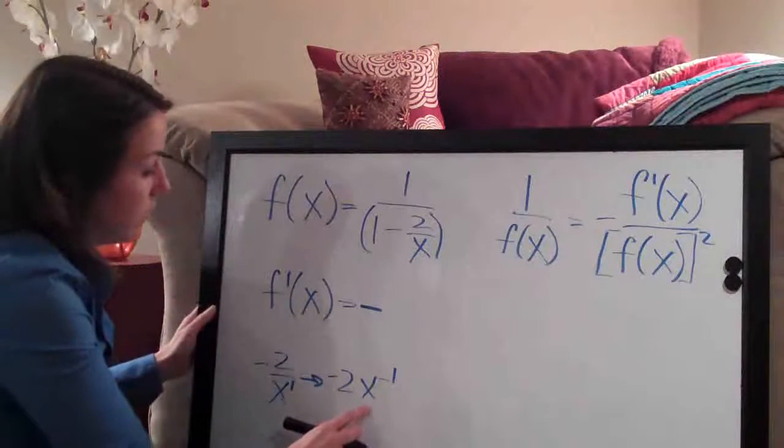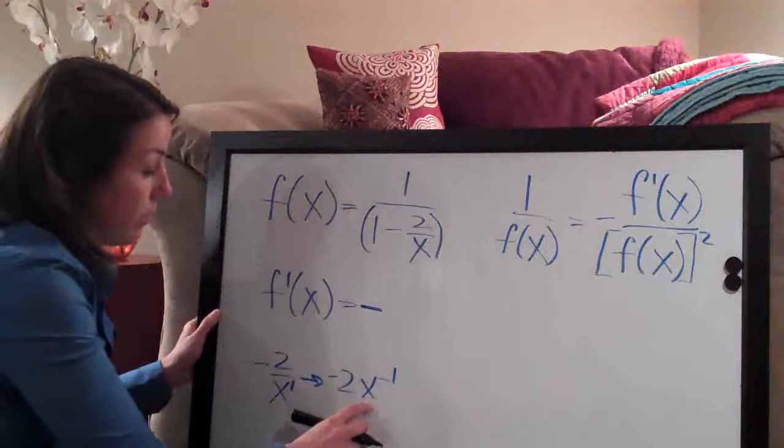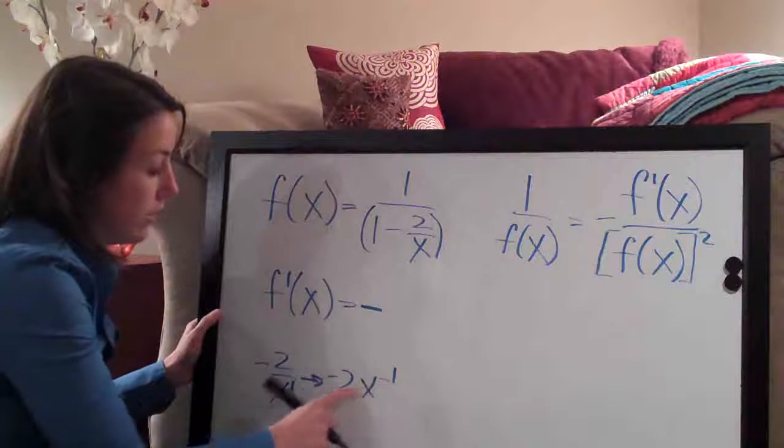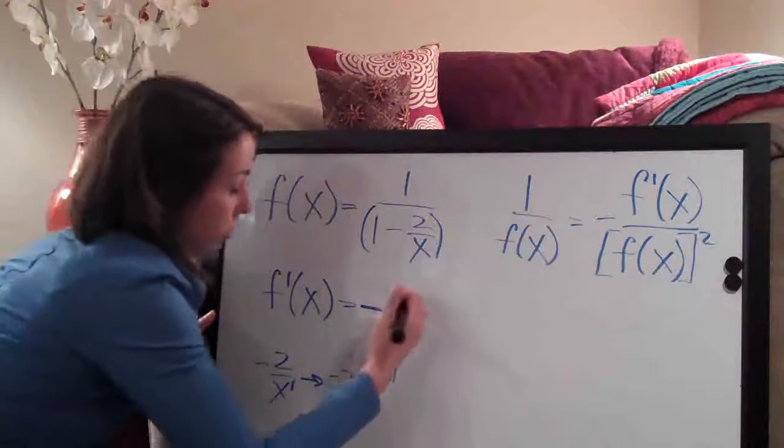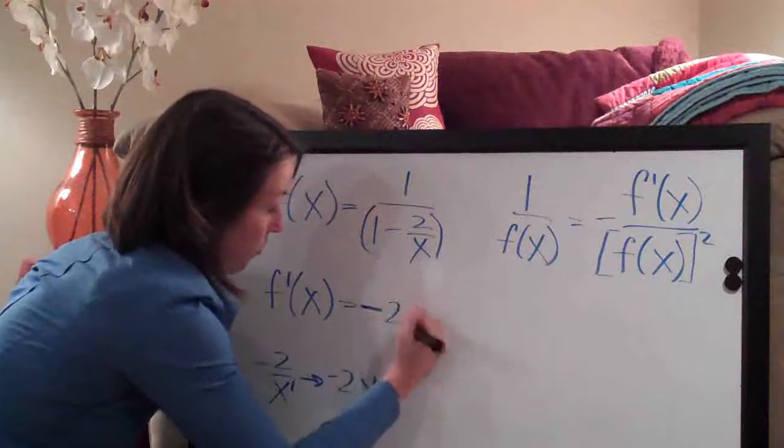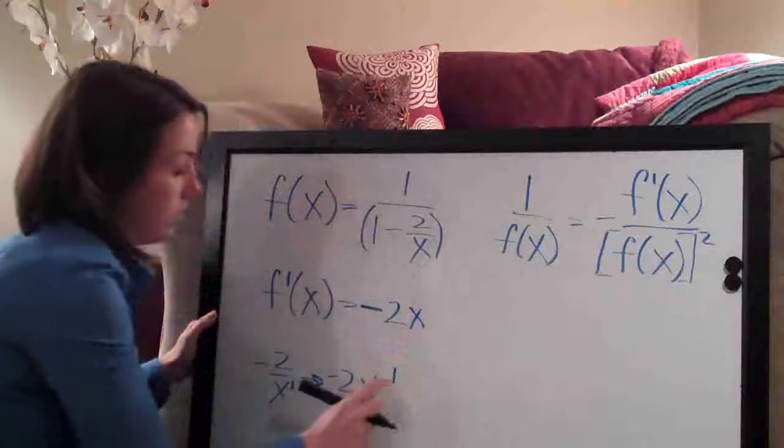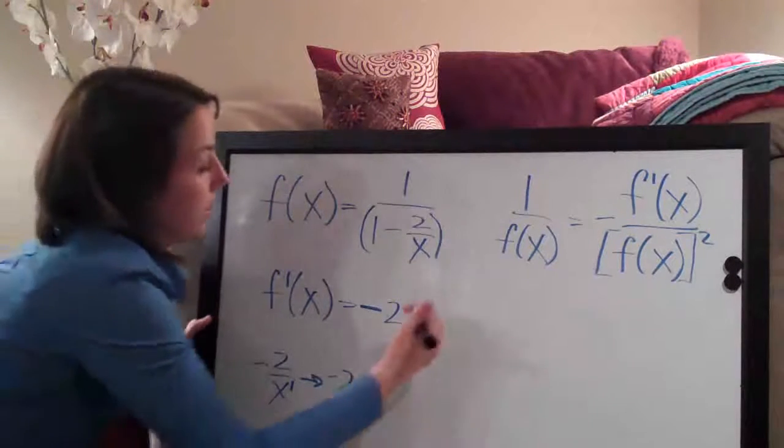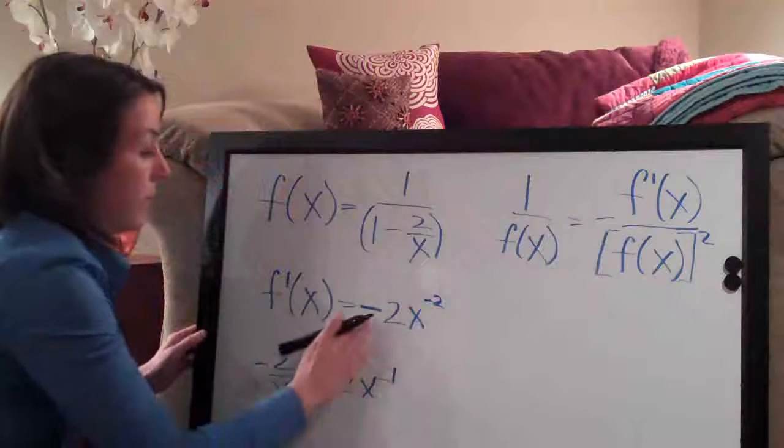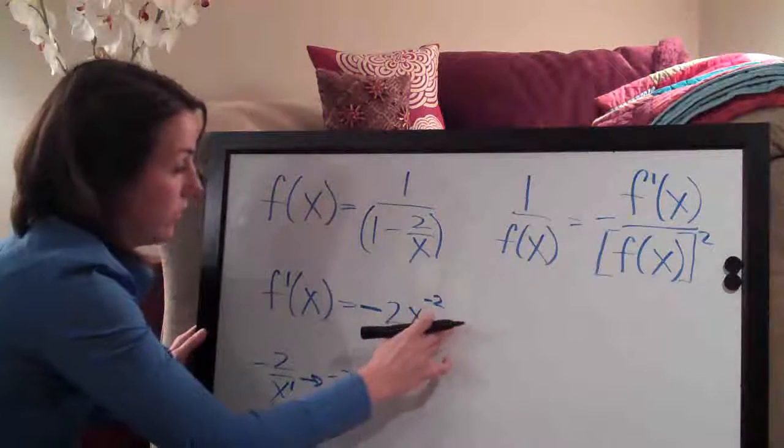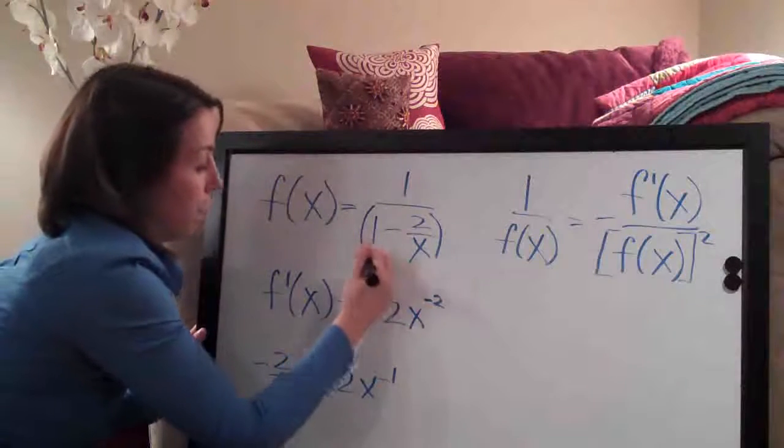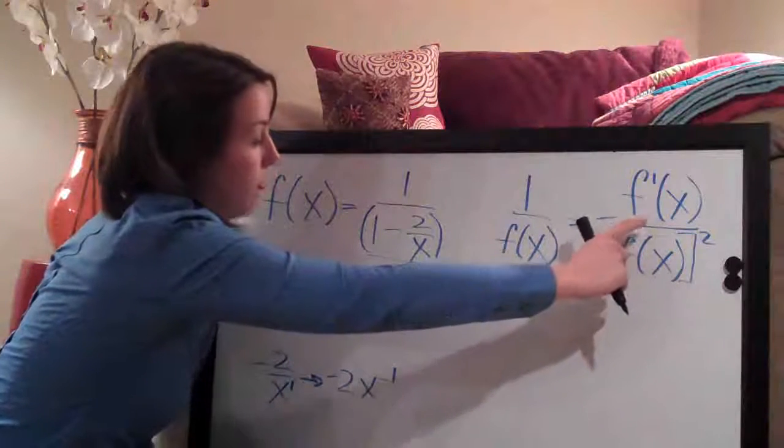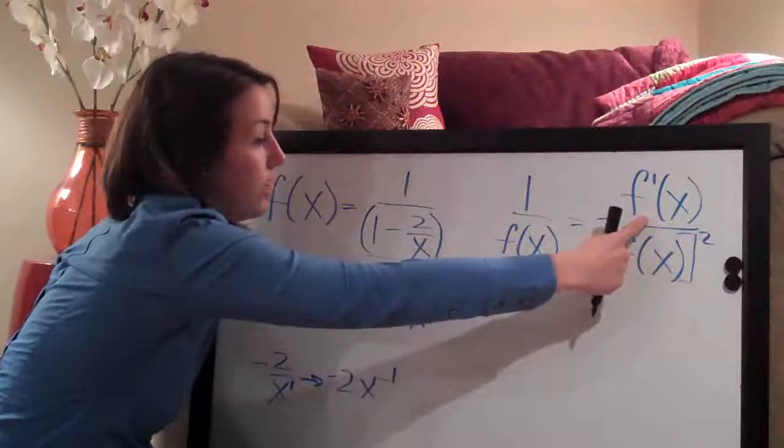So the derivative of this guy, the way that we do that is multiply the exponent by the coefficient. So negative 1 times negative 2 is simply 2. So we're going to say 2 and then x and then we subtract 1 from the exponent always. So negative 1 minus 1 is negative 2. So I'm going to have 2x to the negative 2 and that is the derivative of this function right here. So we've taken now the derivative and we've completed the numerator over here in the rule.